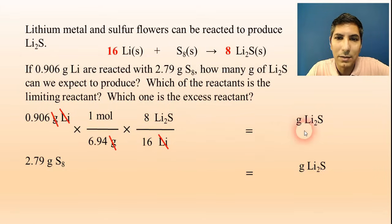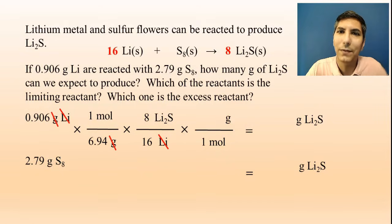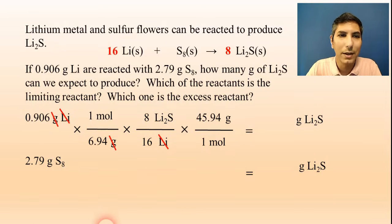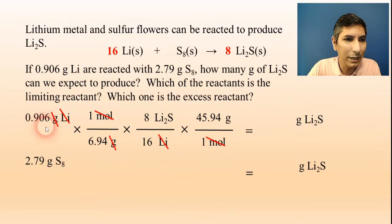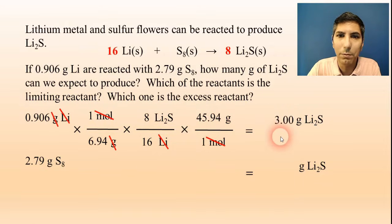We want grams of lithium sulfide, so in the last step we put one mole on the bottom and grams on top. The molar mass of lithium sulfide is about 45.94 grams per mole. Moles cancel, and on the calculator: 0.906 ÷ 6.94 × (8 ÷ 16) × 45.94, giving an answer of about 3.00 grams of lithium sulfide.